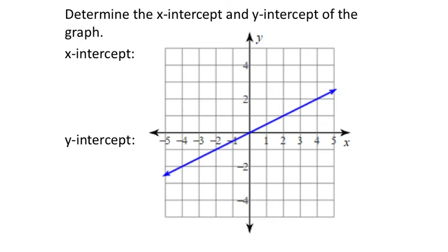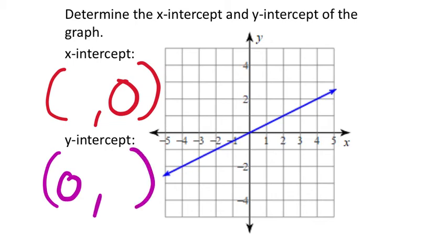Working the same way on another line — the x-intercept has y value 0, and the y-intercept has x value 0. This blue line goes through the x-axis right in the middle, which is where x equals 0, and the y value there is also 0. So both intercepts are (0, 0) — the origin. This creates what is called a proportional relationship.